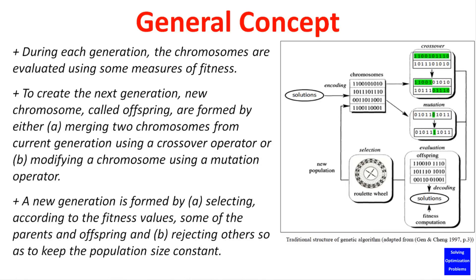During each generation, the chromosomes are evaluated using some measures of fitness. To create the next generation, new chromosomes, called offspring, are formed by either: A) merging two chromosomes from the current generation using a crossover operator, or B) modifying a chromosome using a mutation operator.